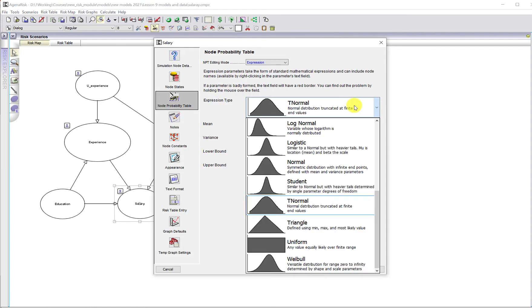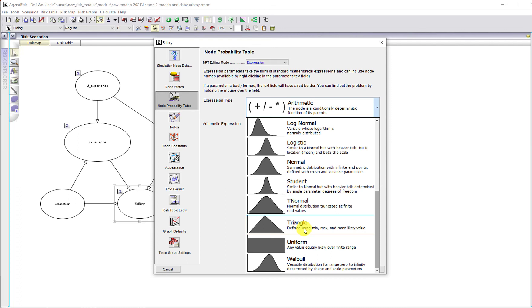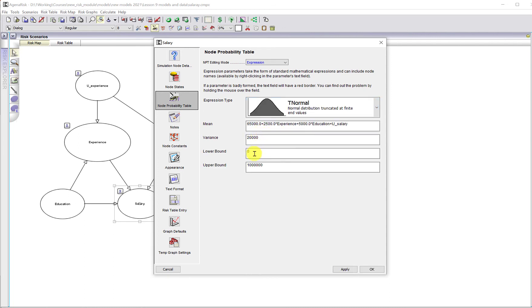And similarly for the salary. Again, rather than just define it as arithmetic, as it was before, I'm choosing truncated normal expression where the lower bound is 0, upper bound is a million. And I'm using exactly the same expression, but adding some variance in here. So I'm adding the uncertainty.